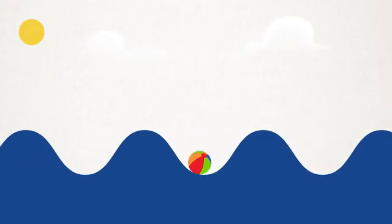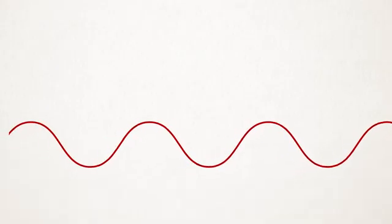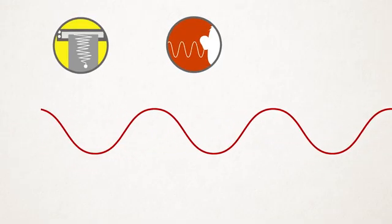When you think of waves, you might think of waves that travel across the ocean. But there are all kinds of different waves, like seismic waves, sound waves, and light waves.